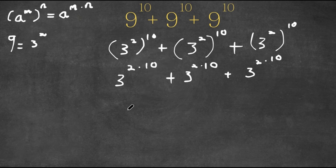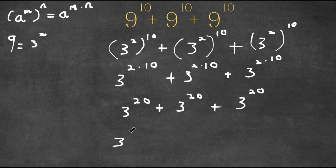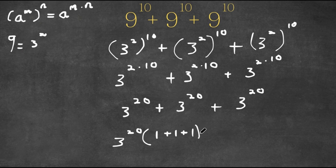Now 2 times 10 is 20, so we have 3 to the power of 20 plus 3 to the power of 20 plus 3 to the power of 20. Factoring out 3 to the power of 20, we get 3 to the power of 20 times — 3 to the power of 20 divided by 3 to the power of 20 is 1, and the same for the other two. So now we have 3 to the power of 20 times 1 plus 1 plus 1, and 1 plus 1 plus 1 is 3. So now we have 3 to the power of 20 times 3.